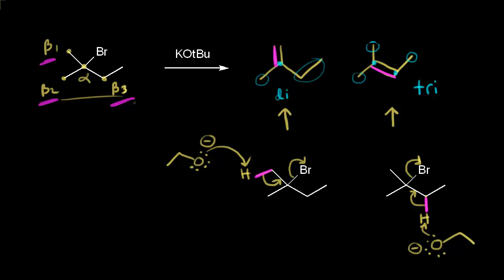Now let's do this reaction using a different base, starting with the same alkyl halide and the same two possible products. This time we're using potassium tert-butoxide as our base — positive charge on potassium, negative charge on the oxygen. Potassium tert-butoxide is a sterically hindered base. If this takes a proton from the beta one or beta two positions, we form the disubstituted alkene. If we take a proton from the beta three position, we form the trisubstituted alkene.